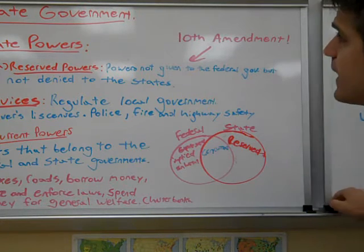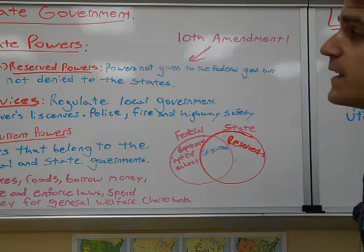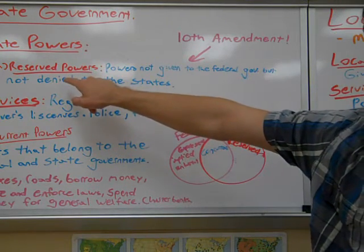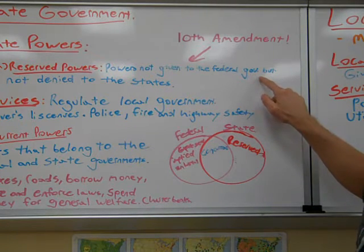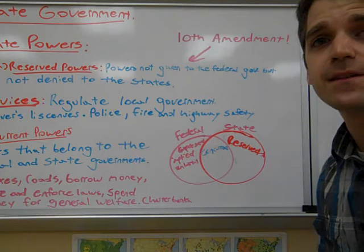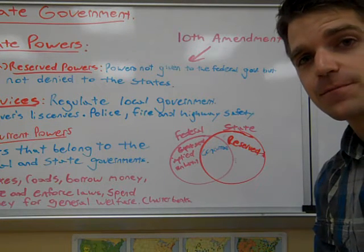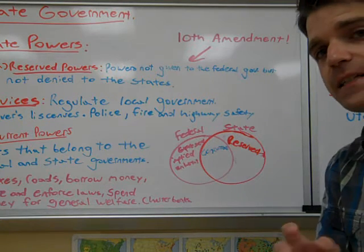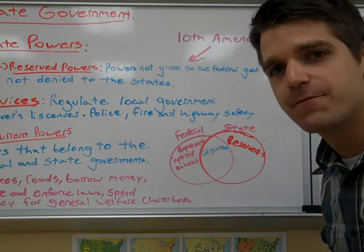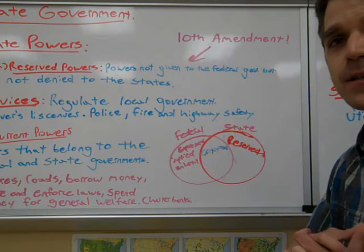The next type of government is the state government — the government of a state, for example Florida. State governments have powers established in the Tenth Amendment, called reserved powers: powers not given to the federal government and not denied to the states. Essentially, if a power hasn't been given to the federal government and hasn't been denied to the states, the states have those powers, giving them more freedom.